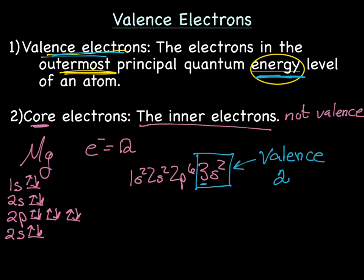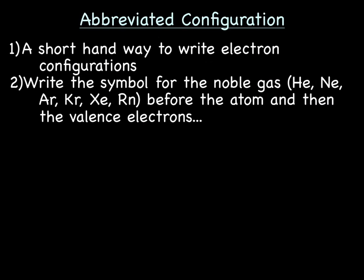One more quick topic: abbreviated configuration. Abbreviated configuration is a shorthand way to write electron configurations. To write it, you write the symbol for the noble gas that comes before the atom, and then write the valence electrons. The noble gases are the very last column on the far right of your periodic table — helium, neon, argon, krypton, xenon, radon.